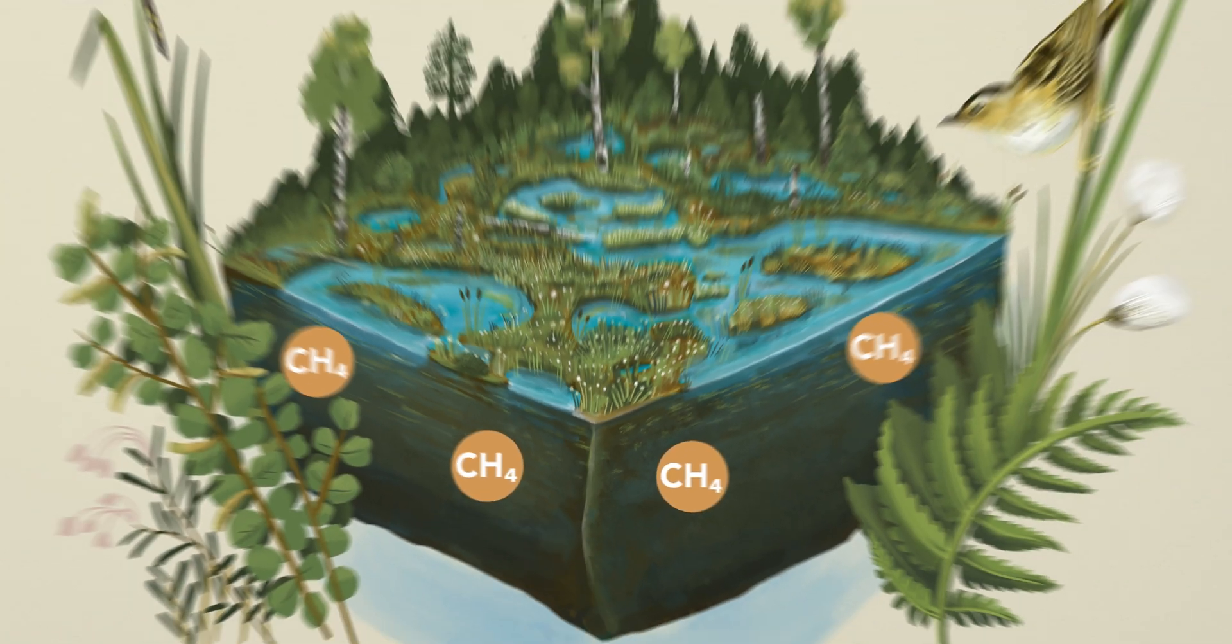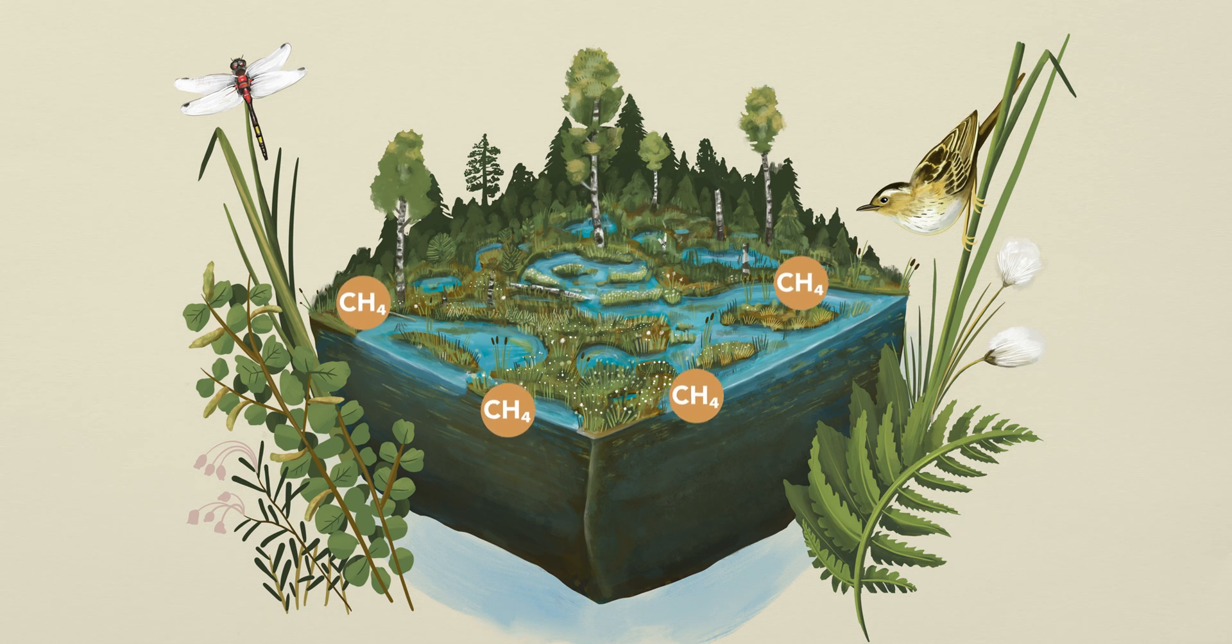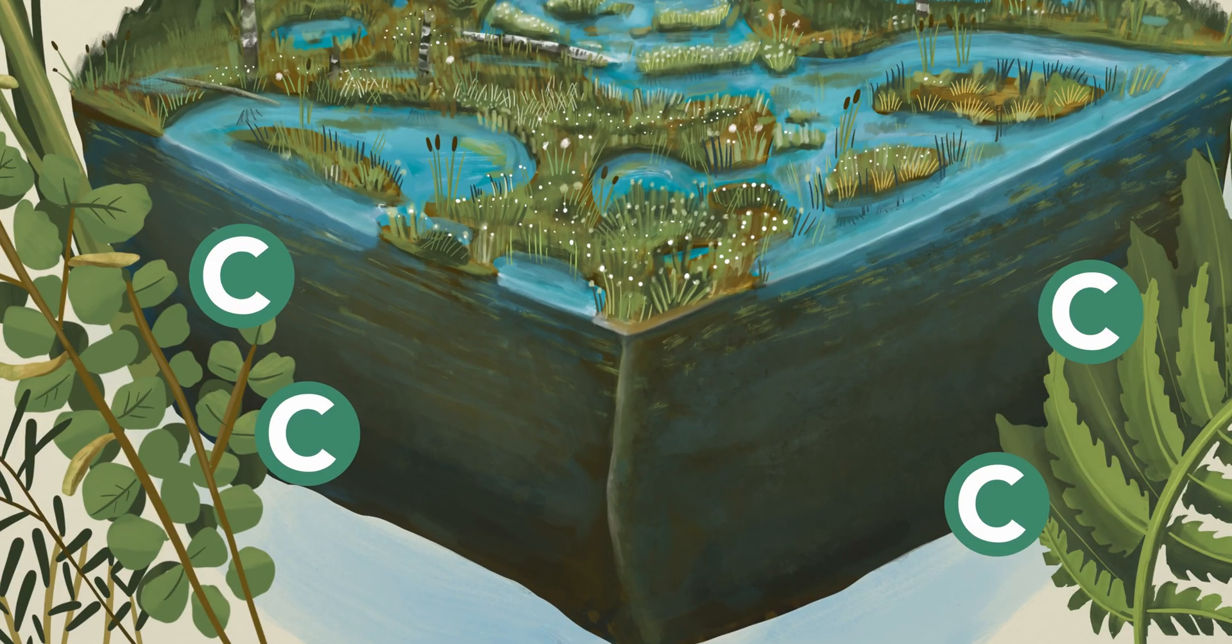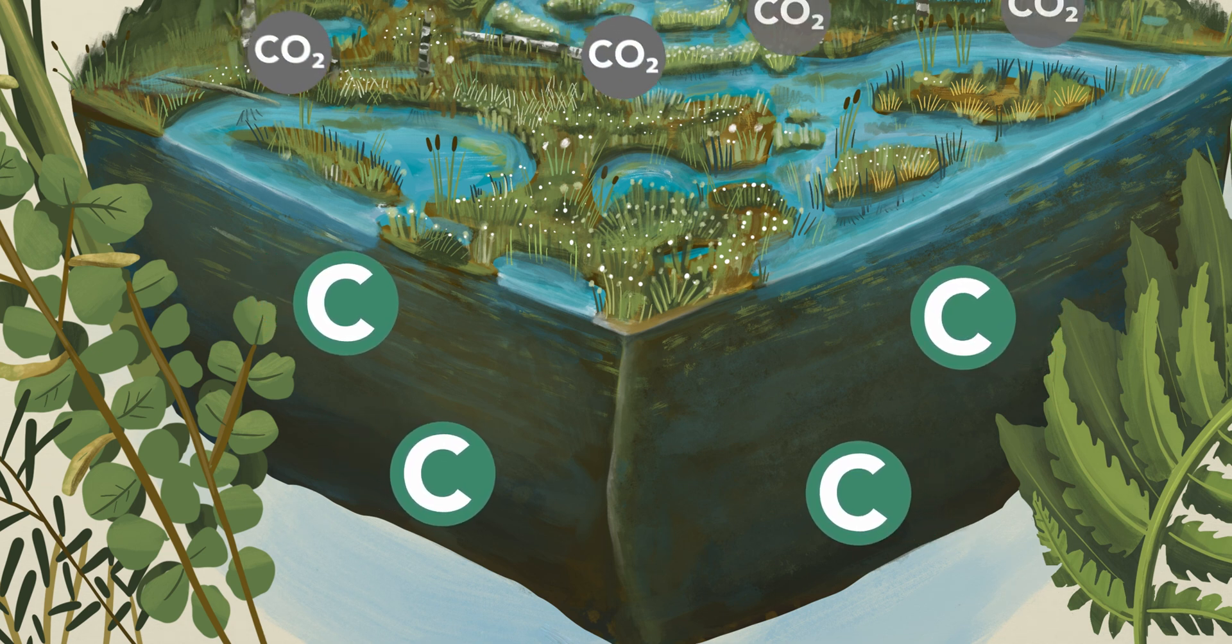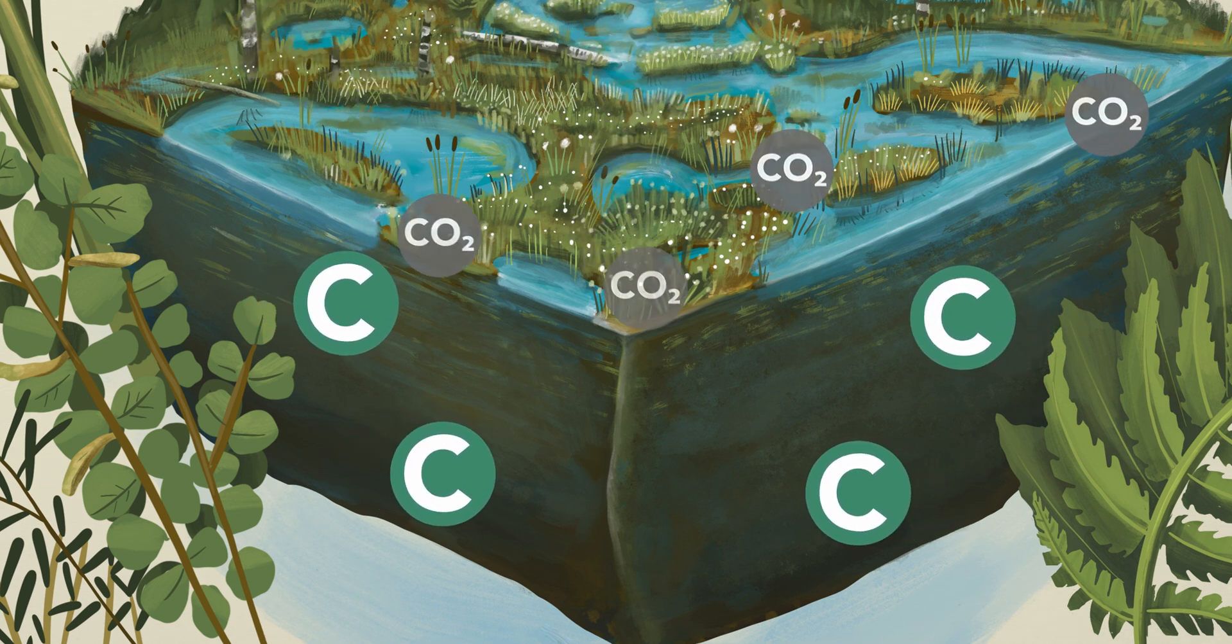Methane is a strong greenhouse gas, stronger than carbon dioxide. However, in the absence of oxygen, decomposition remains incomplete and dead organic matter accumulates in the form of peat, thereby permanently removing carbon dioxide from the atmosphere.